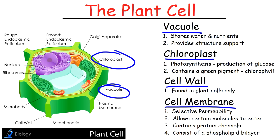Another organelle found in the plant cell but not in the animal cell is the chloroplasts. The chloroplasts are green due to a pigment known as chlorophyll, which plays a role in photosynthesis — a process by which the plant takes sunlight, carbon dioxide, and water and produces glucose and oxygen gas. Another feature present in plant cells but not in animal cells is the presence of a cell wall.